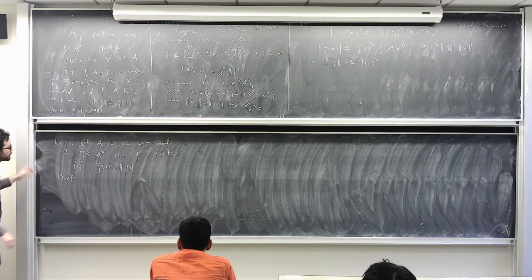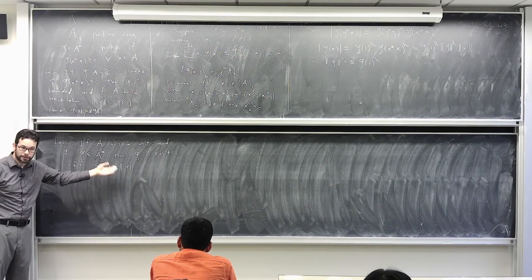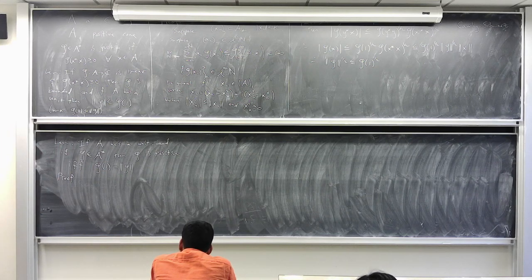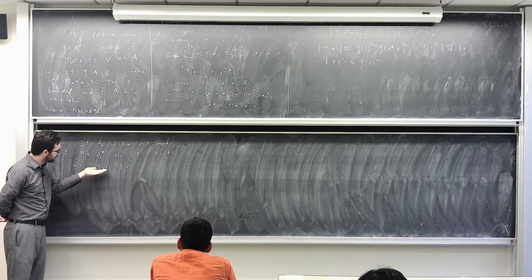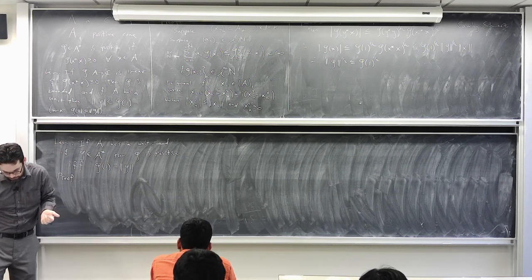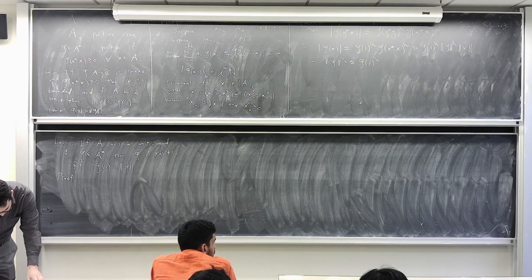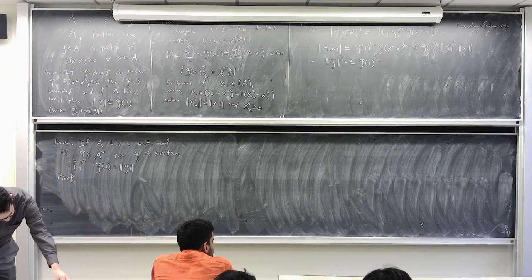One direction we proved above: if φ is a positive linear functional then φ(1) = ‖φ‖. Now we want to prove the converse: if φ is a continuous linear functional with φ(1) = ‖φ‖, then it should be a positive linear functional. That'll take a bit more work, but it's not so bad.